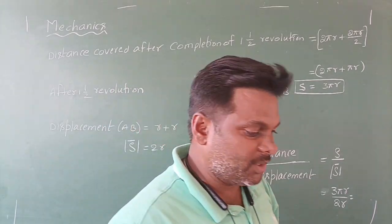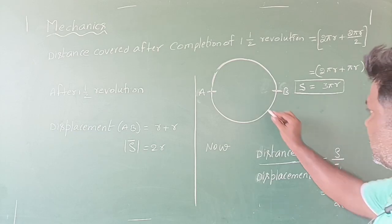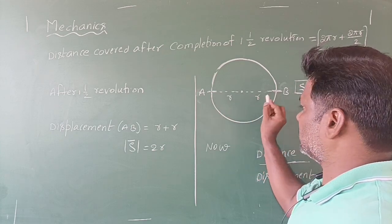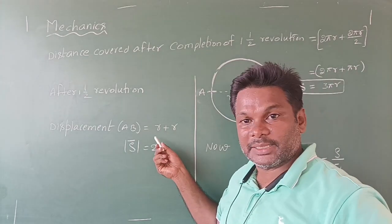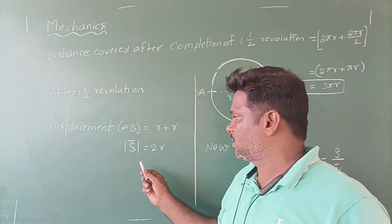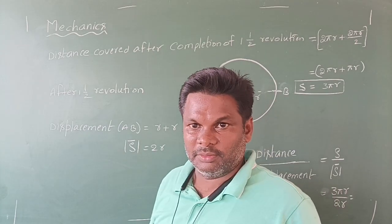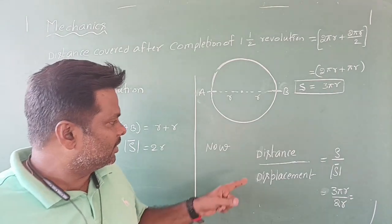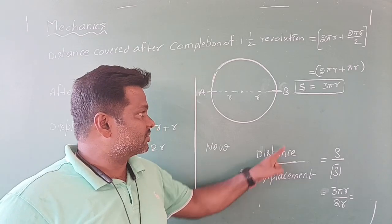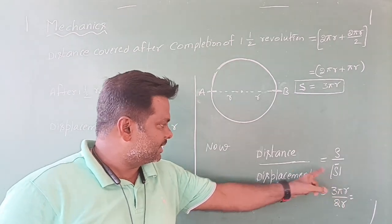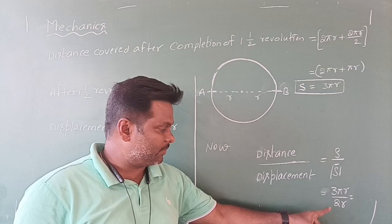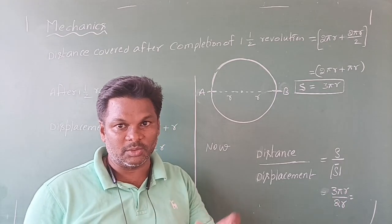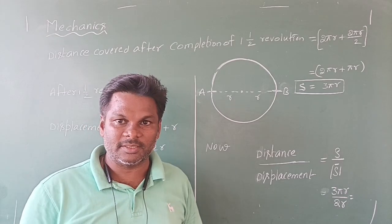After one and a half revolutions the body ends up at the diametrically opposite point. From the starting point to that point is r + r = 2r, which is the diameter. This 2r is the shortest path between the two points, so the magnitude of displacement |s̄| = 2r. Therefore the ratio of distance to displacement is 3πr / 2r = 3π/2. In tomorrow's class we will meet once again with two more problems along with a simple concept.